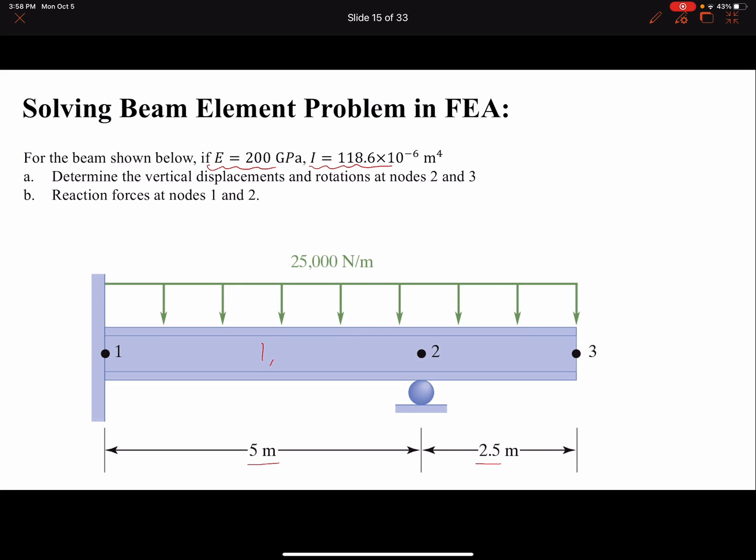Here I have two elements. Each element is going to have two nodes. In general, before solving it, I know my stiffness matrix should be 6 by 6 because I have three nodes and each node has two degrees of freedom.